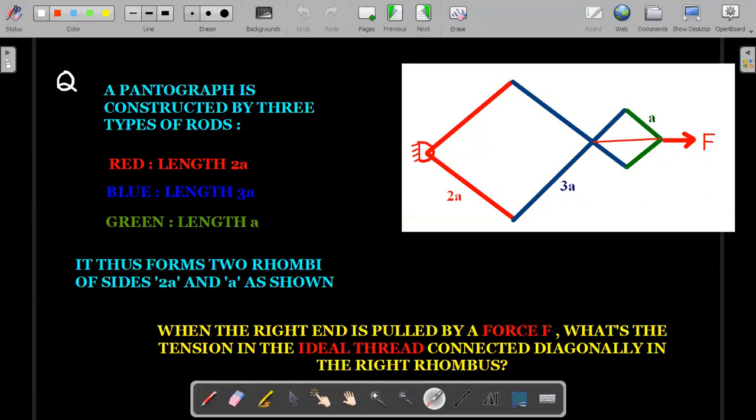So you could understand that if I were to pull this pantograph on the right with a force F, and if this thread was not there, this point and this point will come closer and the pantograph is set to collapse. So in order to prevent it from collapsing, I have tied an ideal thread between these two hinges.